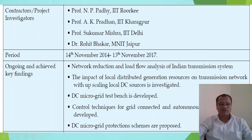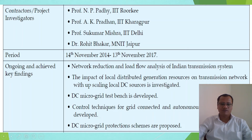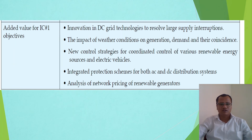The achievements after completion of this project are: network reduction and load flow analysis of the Indian transmission system; impact of local distributed generation resources on transmission network with upscaling of local DC sources investigated; a DC microgrid test bench was developed; control techniques for grid-connected and autonomous DC grids were developed; DC grid protection schemes were proposed. Value additions include analysis of network pricing, integration of protection schemes, new control strategies, impact of weather conditions, and innovations in DC technologies.